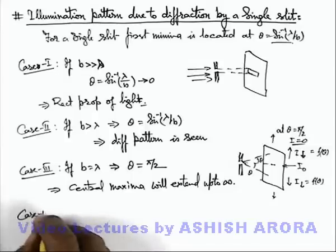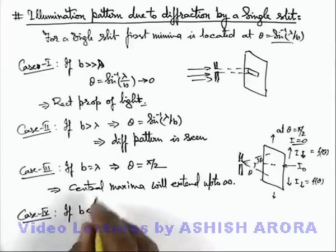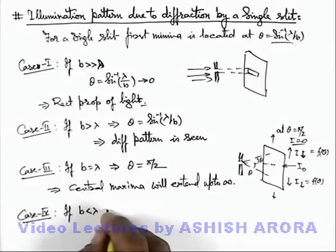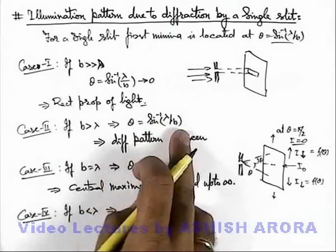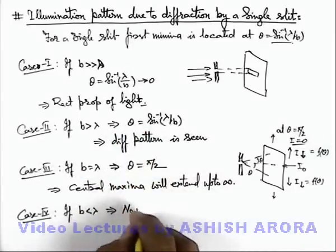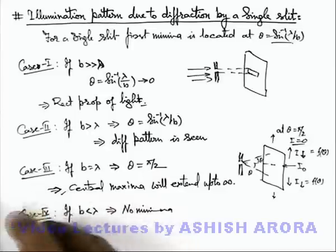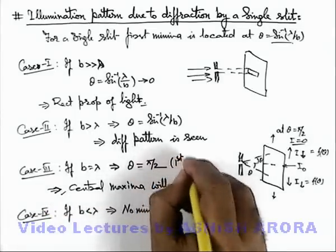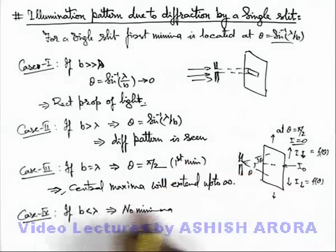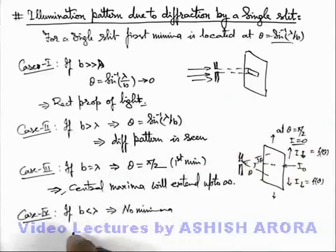Now if we consider Case 4, in which we are given that if b is less compared to lambda or very less compared to lambda, then this implies sine inverse lambda by b will not give any value of theta. That means no minima is obtained. In this situation we have discussed that minima is obtained at theta equals pi by 2, this is the position of first minima. Whereas in this situation no minima is there, and if b is very less compared to lambda, we can say almost uniform illumination will be there on screen.